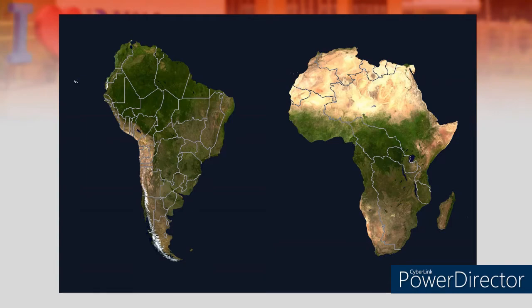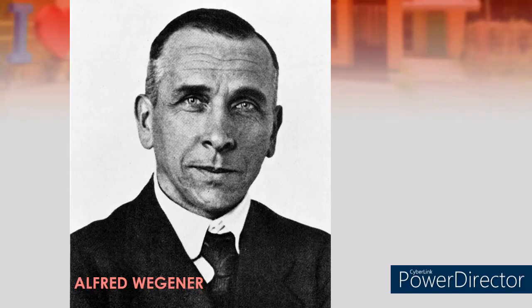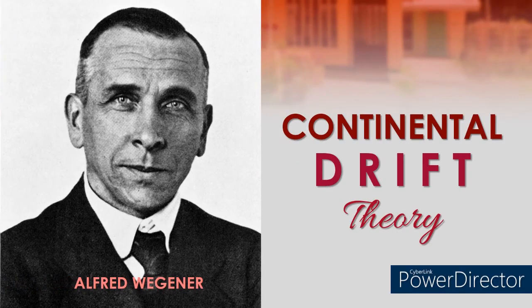Now that we have the review out of the way, let us look at this image. What do you see in the picture? The picture shows the continents South America and Africa. Observe how they look — you might notice that they almost look like jigsaw puzzle pieces that fit together, especially the eastern coastline of South America and the western coastline of Africa. This led one scientist to believe that these continents and all others were once connected. Let me introduce Alfred Wegener, who proposed the idea that continents were once connected and drifted apart into their current locations. Wegener called it the Continental Drift Theory.